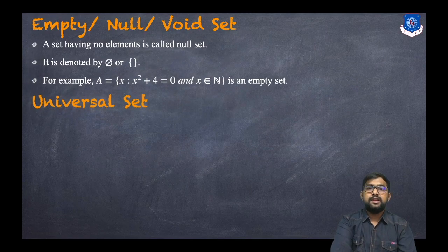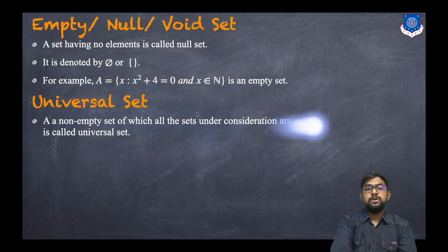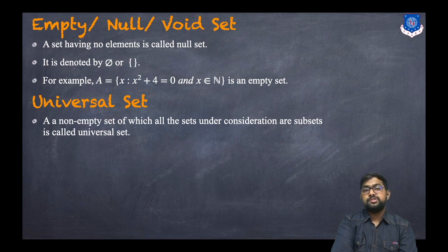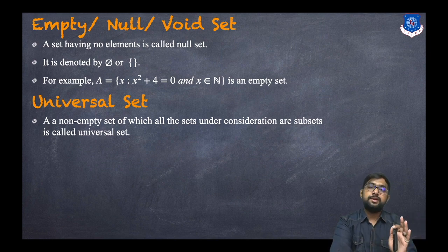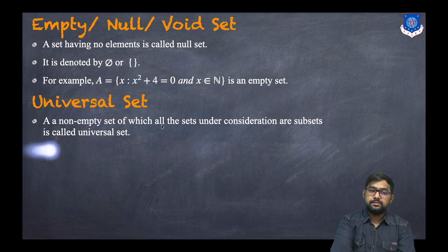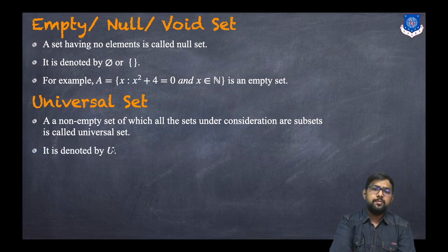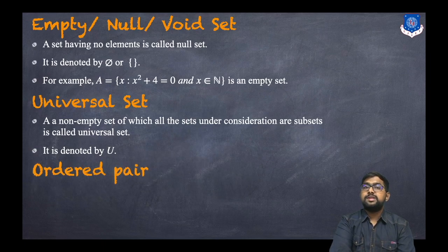A universal set is a non-empty set of which all sets under consideration are subsets. It is denoted by U (capital U).